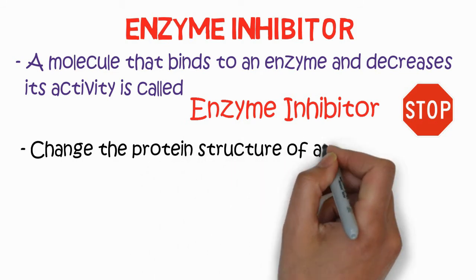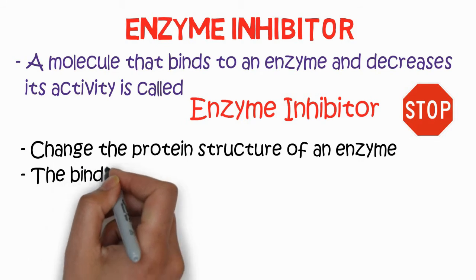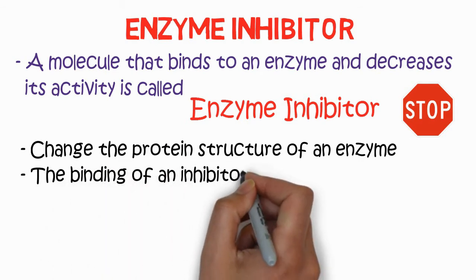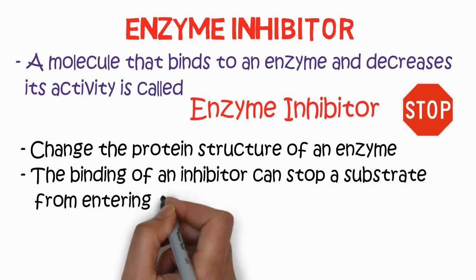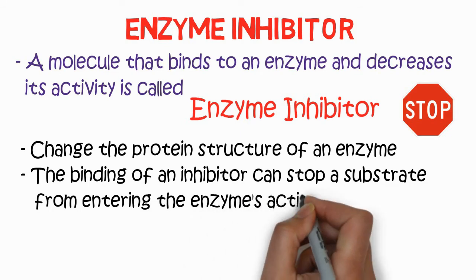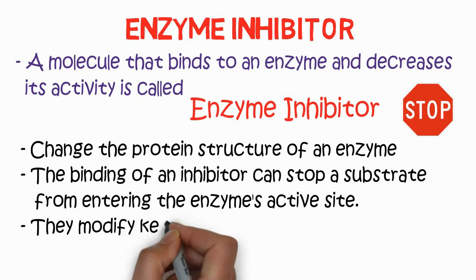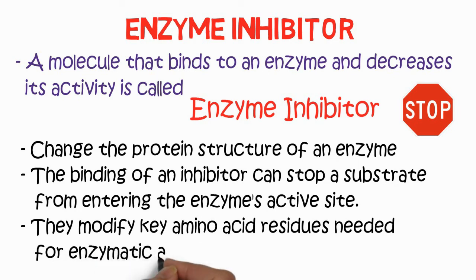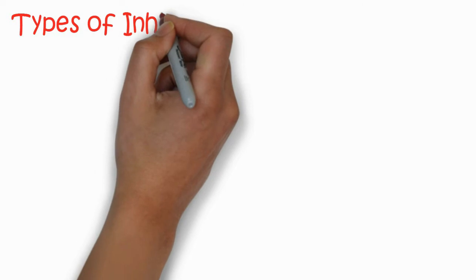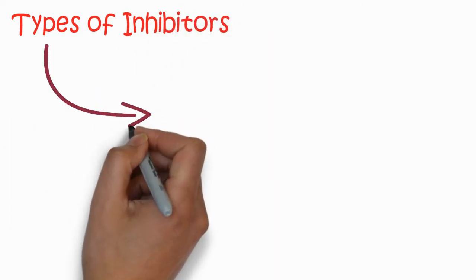This molecule may be organic or inorganic. It stops the enzymatic reaction and changes the protein structure of an enzyme. The inhibitor binding can stop a substrate from entering the enzyme's active site, and they modify amino acid residues needed for enzymatic activity.